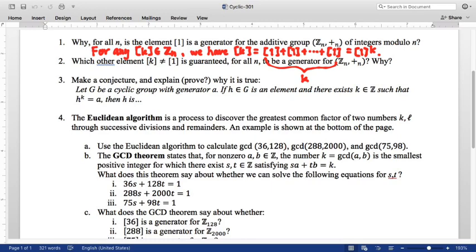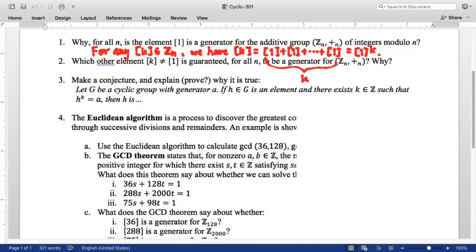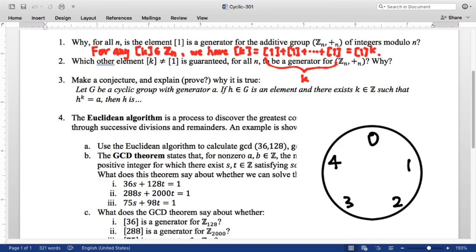Is there another element in Z mod n that's guaranteed to also be a generator? Let's get specific for a minute. Let's suppose n is equal to five. If n is equal to five, then the elements in my group, I can think of like a five-hour clock. One is a generator because if I start at the identity and I add one repeatedly, I'm going to hit every single element in this group.